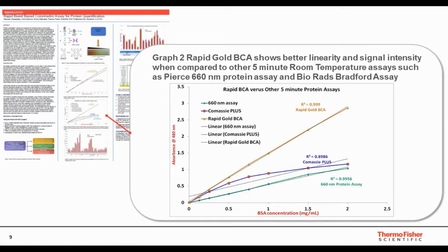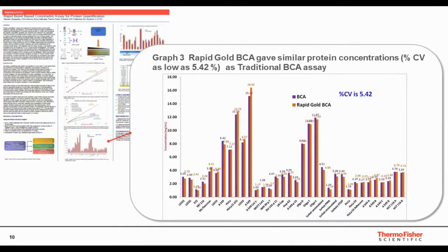When compared to other 5-minute protein assays, such as the 660 nanometer assay and Coomassie Plus, the Rapid Gold BCA shows better linearity and higher signal intensity. The Rapid Gold BCA curve is shown in orange, the Coomassie curve is shown in blue, and the 660 nanometer assay curve is shown in green in the graph.